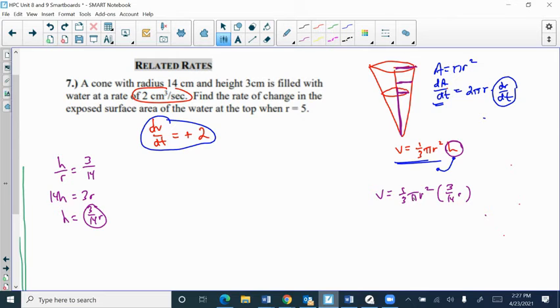When I multiply, the one third and the three cancel, so I just get pi over 14 and then r cubed. So the volume of this particular cone with that ratio of radius to height is pi over 14 times r cubed. Now when I do the derivative with respect to time, dV/dt, I'm going to get three pi over 14 r squared times dr/dt.